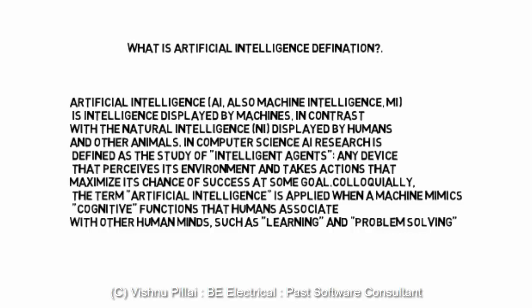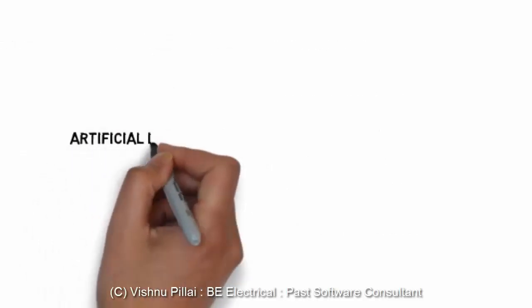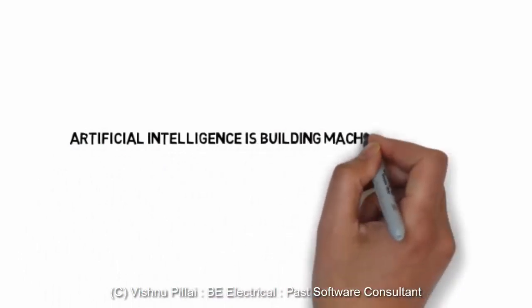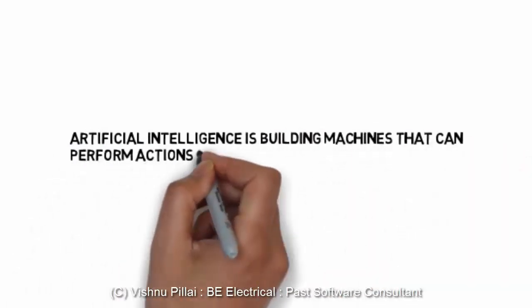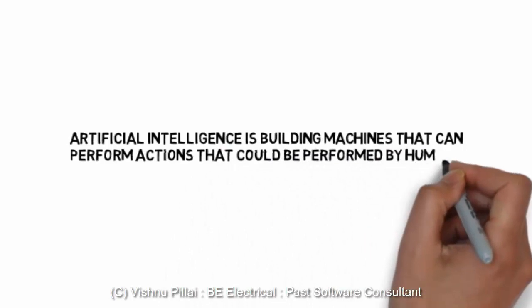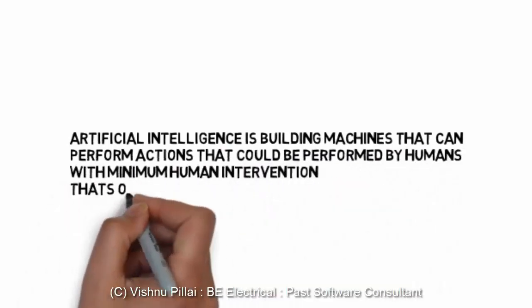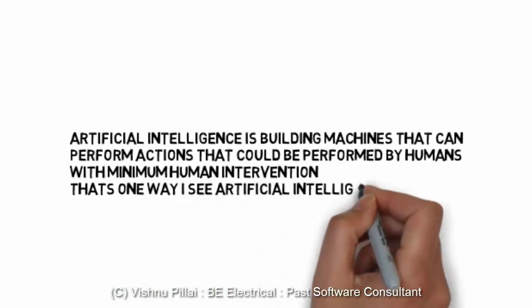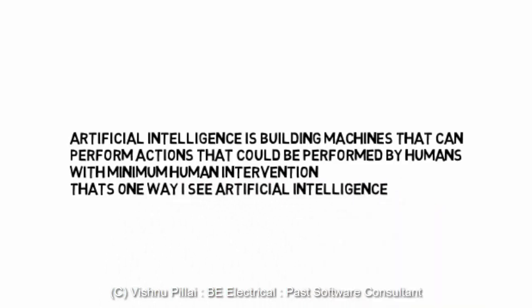This is one of the basic definitions from Wikipedia, and there are many others. It's also possible to define your own definition for artificial intelligence — the field is that wide. The basic understanding is that when machines are capable of mimicking human behavior or any activity that includes intelligence shown by humans, and it is done by machines, such intelligence can be known as artificial intelligence. According to me, artificial intelligence is about building machines that can perform actions that could be performed by humans with minimum intervention.